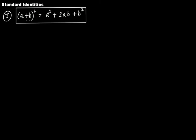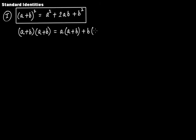(a + b) whole squared is basically (a + b) multiplied by (a + b) — that is a binomial multiplied by a binomial. So this gives us a multiplied by (a + b), plus b multiplied by (a + b), which expands to: a squared, plus ab, plus ba, plus b squared.